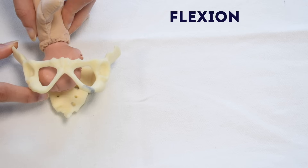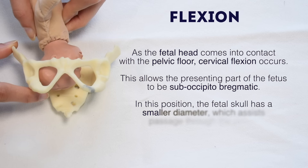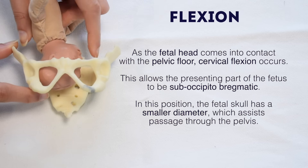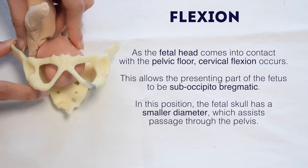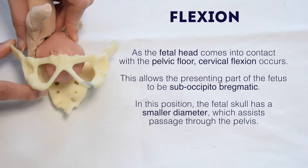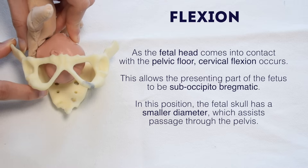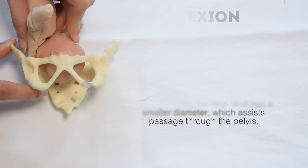Flexion. As the foetus descends, its head comes into contact with the pelvic floor. This causes flexion of the foetal neck, chin to chest, allowing the presenting part of the foetus to be sub-occipitobregmatic. This creates a smaller diameter for the passage through the pelvis.